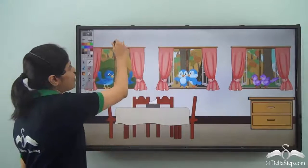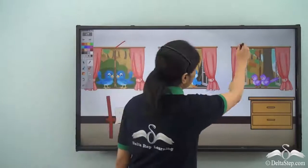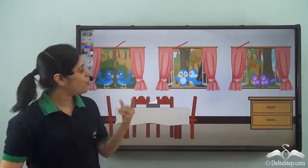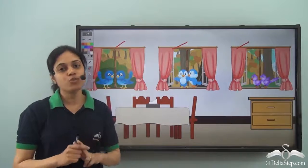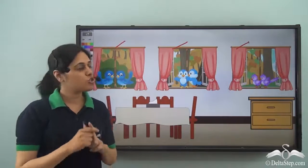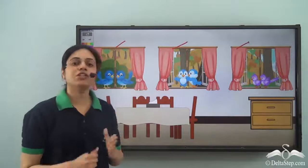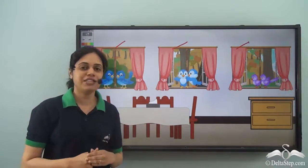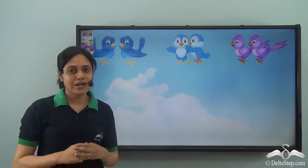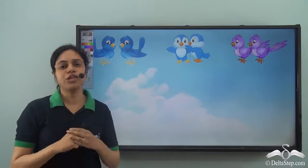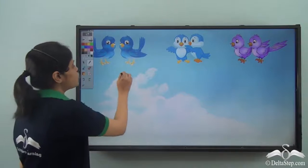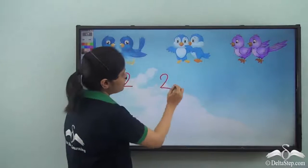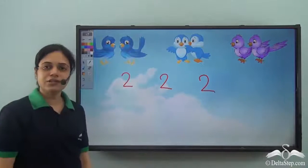There are one, two, three windows, and on each window there are two birds sitting. So on each of the three windows there are two hungry birds sitting and waiting for food. Sara decides to count the number of birds: two birds on the first window, two on the second, and two on the third.